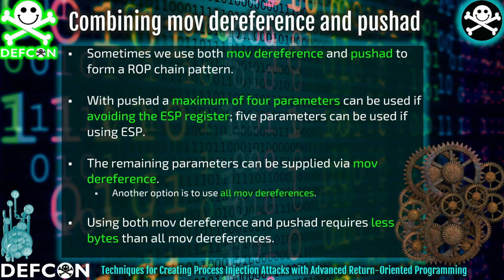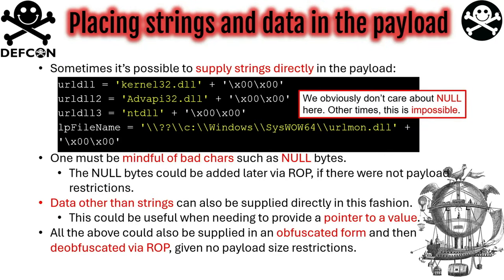Something completely novel is combining move dereference and push/add to build a pattern, creating a ROP chain pattern. Push/add can have a maximum of four parameters — five if you use ESP, though that's challenging — so we can do push/add and supply the remaining variables via move dereference. If you have the option to place strings and data in the payload directly, do it because it saves effort. If EDR is an issue, this may not always be plausible. If there are no payload size restrictions, one option is to obfuscate data and use ROP to de-obfuscate it as needed.